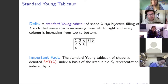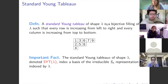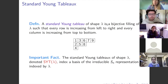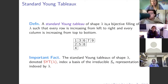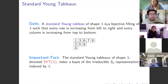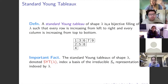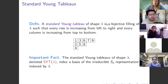The background for this talk is our friend the standard Young tableau of a particular partition shape lambda. That's a bijective filling of squares where the top row has more squares than the second row, the second more than the third, and so on, filled with numbers from 1 to n, increasing to the right and downward. An important fact is that standard Young tableaux of shape lambda index a basis of the irreducible representation of the symmetric group indexed by lambda — a connection known for about 100 years.